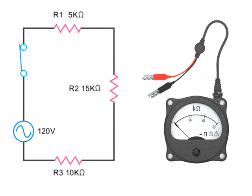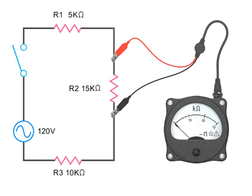Ohmmeters are never to be used in a powered circuit. It can damage the meter as well as present a safety hazard. So make sure switches are open before applying the leads of an ohmmeter to a circuit.